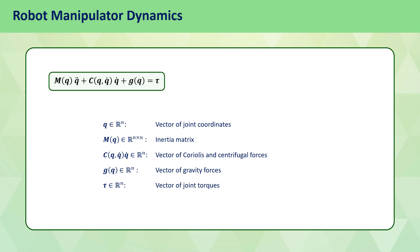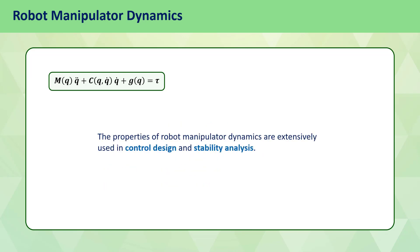Due to the complexity and non-linearity of the dynamic equation, we are interested to learn more about the properties of this equation and the terms which constitute it. These properties are very important in the design and analysis of control systems for robot manipulators. We will only explain those properties relevant to control design and stability analysis using the Lyapunov Stability Theorem. These properties include properties of the inertia matrix M, properties of the centrifugal and Coriolis forces matrix C, and the properties of the gravitational forces and torques vector g.